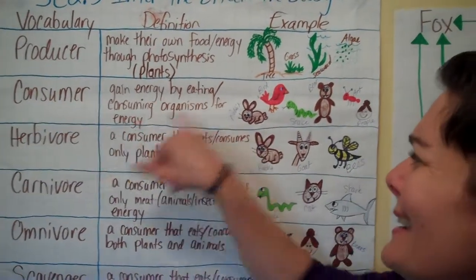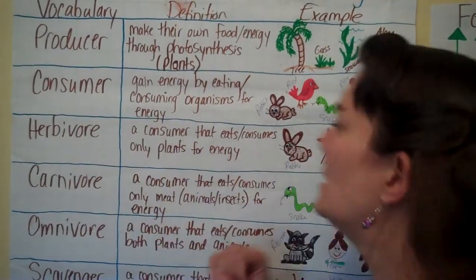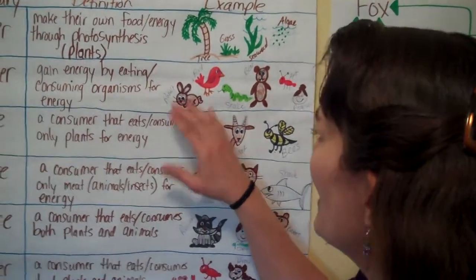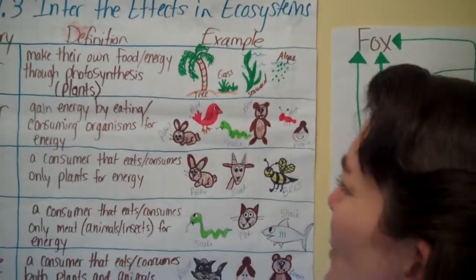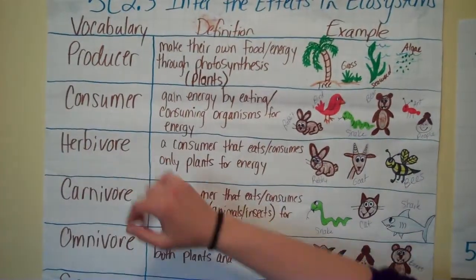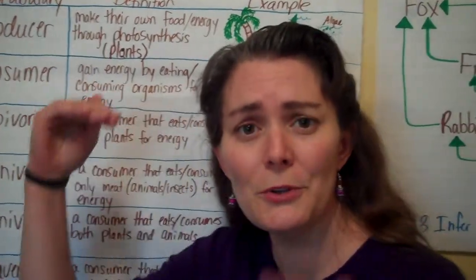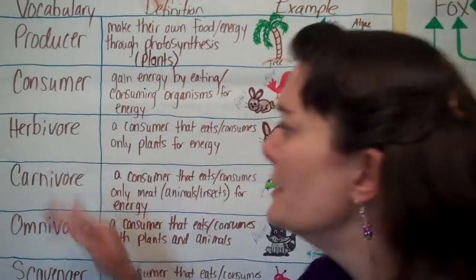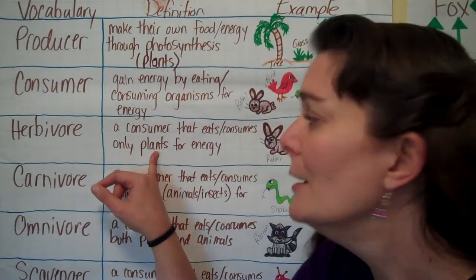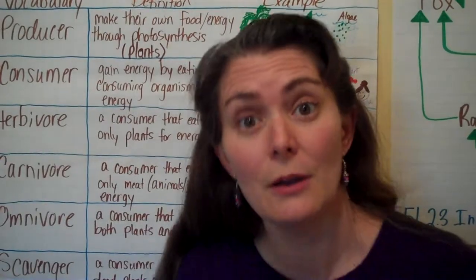Consumers gain energy by eating or consuming organisms for energy — consumers consume, they eat things. Any kind of animal you can think of is a consumer: rabbits, birds, snakes, bears, ants, people. If you are eating, you are a consumer. Herbivores are a type of consumer. Consumers can be broken down into different categories. Herbivores are consumers that eat or consume only plants for energy — rabbits, goats, bees are examples of herbivores.